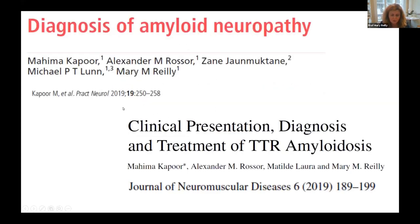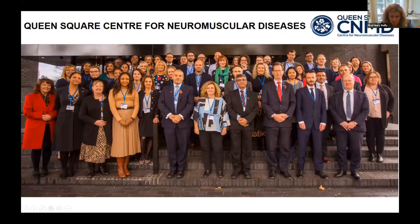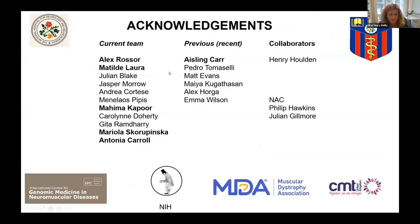These are a couple of references from last year covering guidance on both diagnosis and the various ways neuropathy can present. This is our neuromuscular group in Queen's Square. I want to mention consultant colleagues who run TTR amyloid clinics with me — Alex Rosser, Matilda Laura, and Ashlyn Carr — along with neuropathy colleagues Mike Leon and Hallie Manjie, nurse specialists, therapists, and geneticists. And I'd like to acknowledge research fellows Mahima Kapoor and Antonia Carr who have worked on TTR. Thank you very much — I hope this has answered some of your questions on the neuropathy.